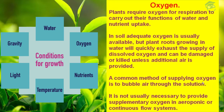A common method of supplying oxygen is to bubble air through the solution. This way, by bubbling air through the solution, you can supply oxygen to plants. It is not usually necessary to provide supplementary oxygen in aeroponic or continuous flow systems.